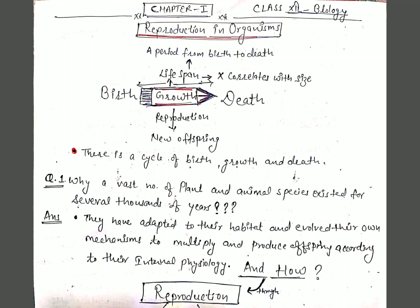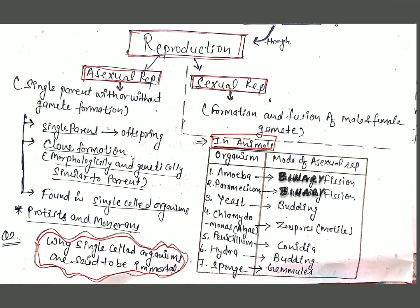We see a vast number of plant and animal species that have existed for several thousands of years because they have adapted to their habitat and evolved their own mechanisms to multiply and produce offspring according to their internal physiology. This multiplication and producing of offspring is known as reproduction.